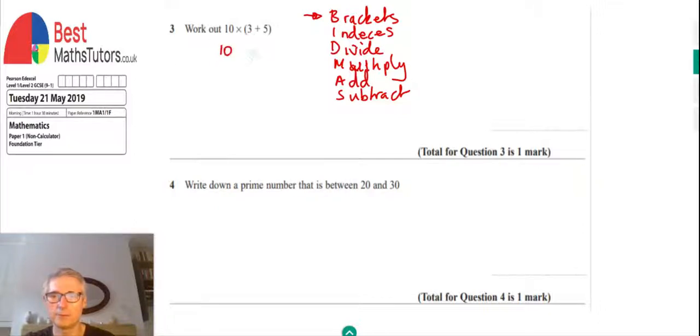We've got 10, and I'm going to work out what's inside the bracket first. So 3 plus 5 is 8. Now we can do the multiplication because that's the next thing that comes in the list. So we're going to go 10 times 8, and 10 times 8 is equal to 80. So we've done that.